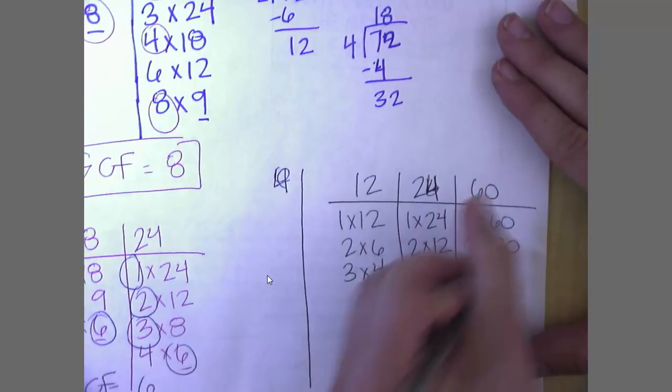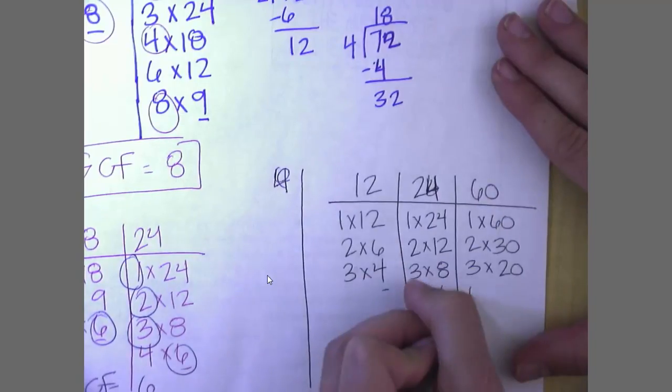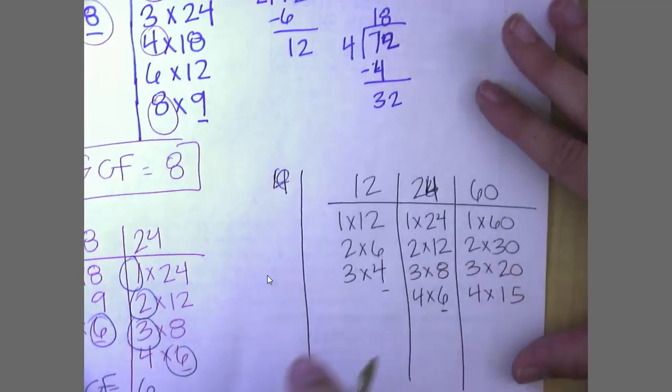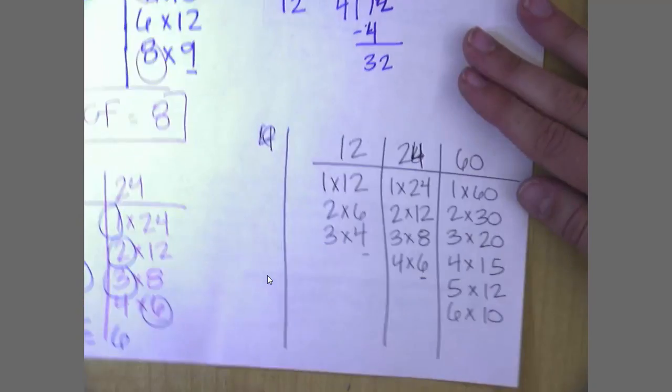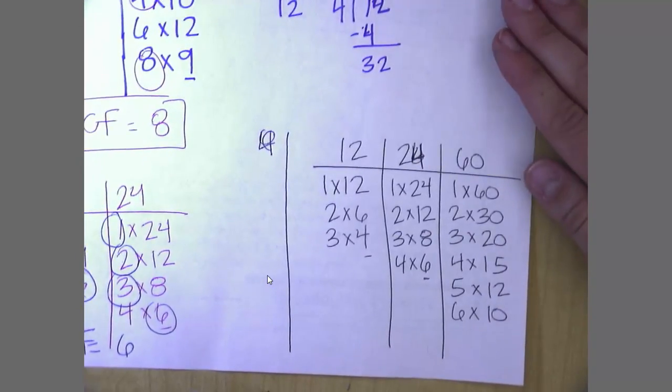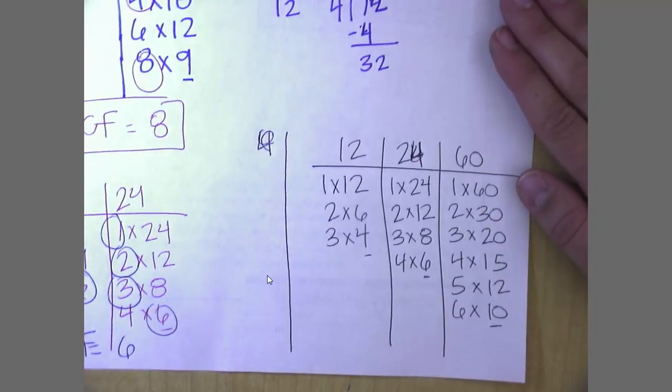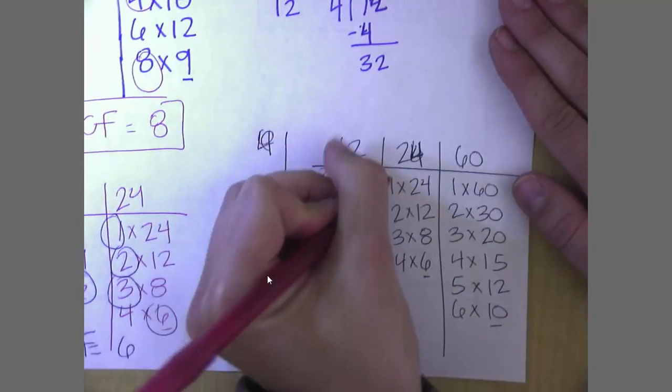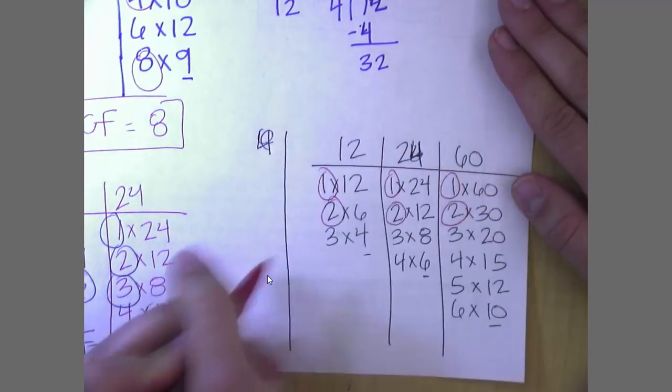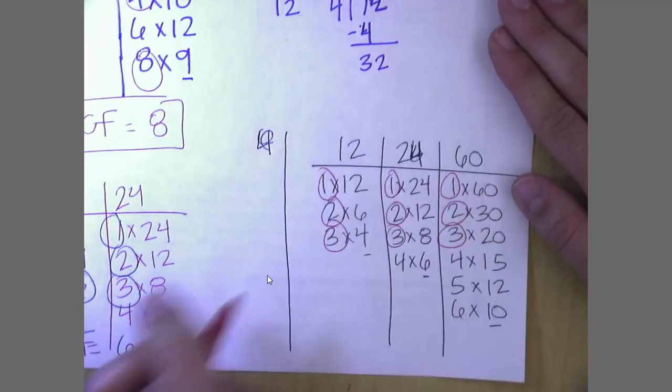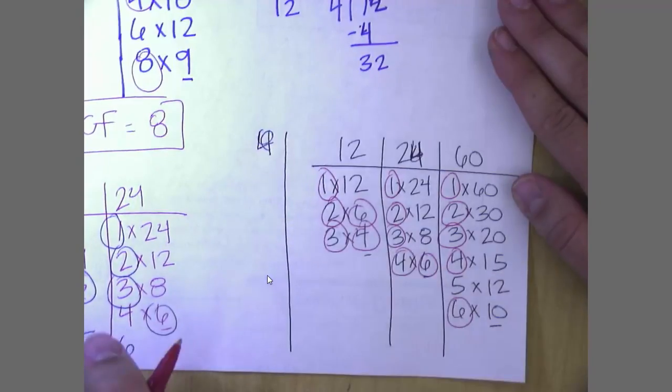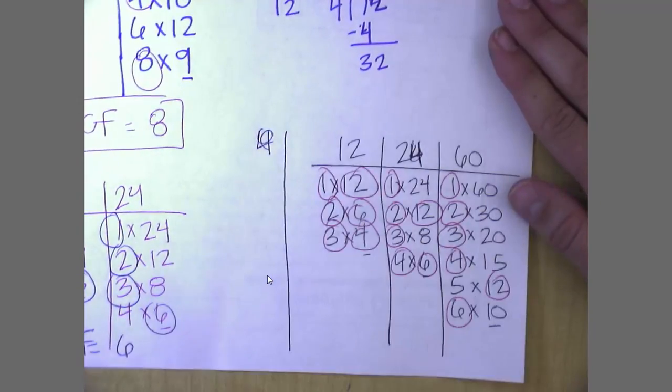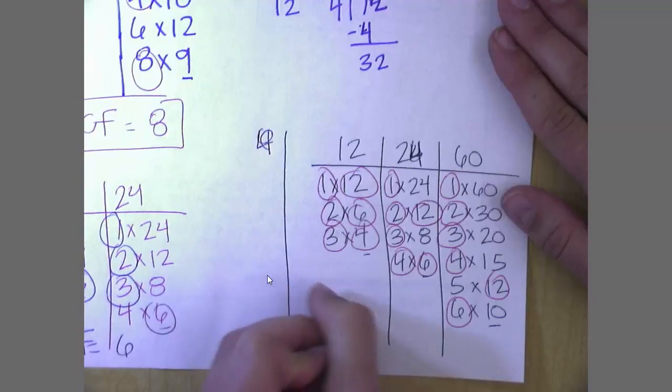1, 2, 3, 4, 5, 6, no 7, no 8, no 9, and there's my 10. So now I've got to look at what all three of these have in common. They've all got 1's, 2's, 3's. They all have 4's. They all have 6's. And they've all got 12's. So my greatest common factor is 12.